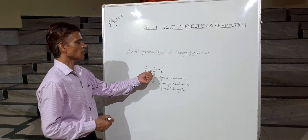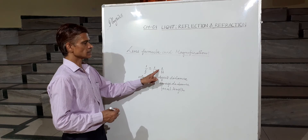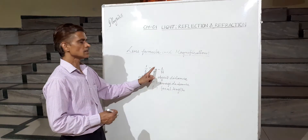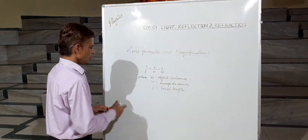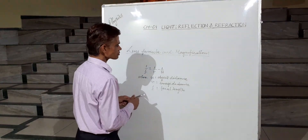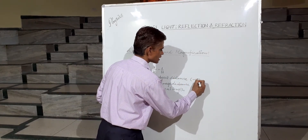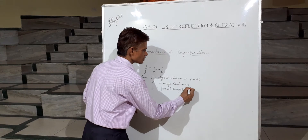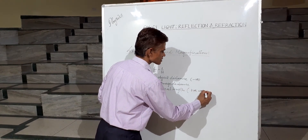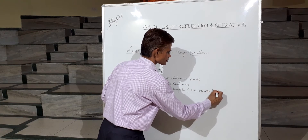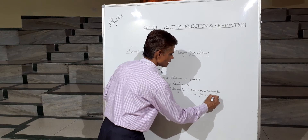This is different from the Mirror Formula. In the Mirror Formula you have a positive sign, whereas here you have a negative sign, and it is v first and then u. As discussed earlier, the object distance is always taken as negative, and the focal length is taken as positive for a convex lens and negative for a concave lens.